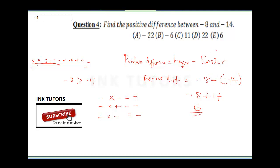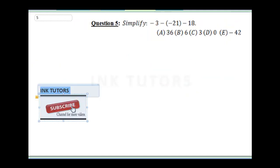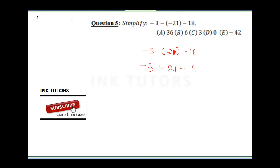Question five: Simplify −3 − (−2 × 21 − 18). Using the rule that minus times minus gives plus: −3 + 21 − 18 = −3 + 3 = 0. It's like having 3 naira and owing 3 naira — when you pay it, you're left with zero. The final answer is 0.